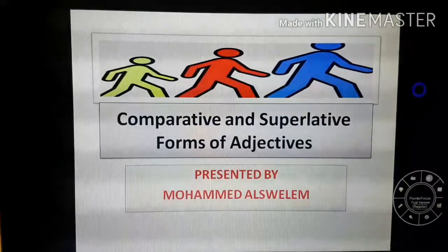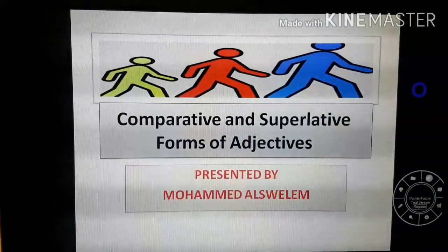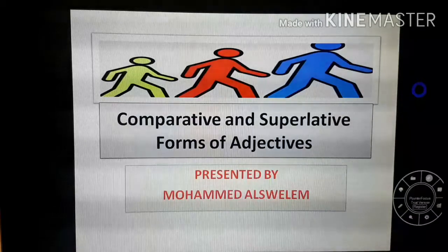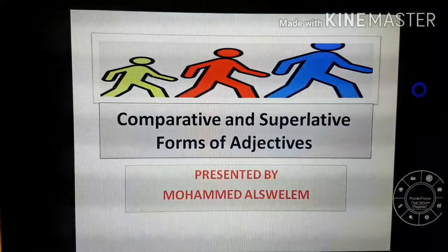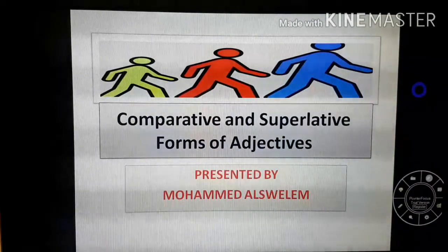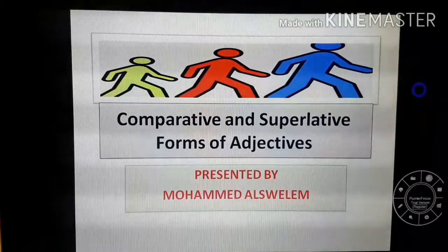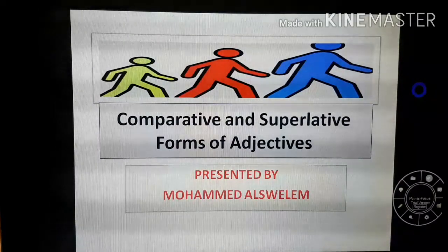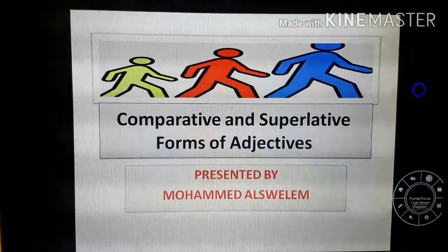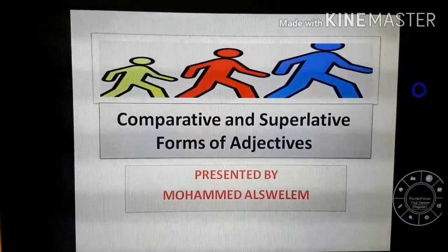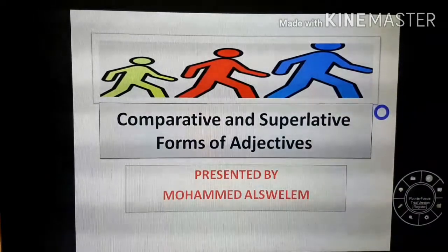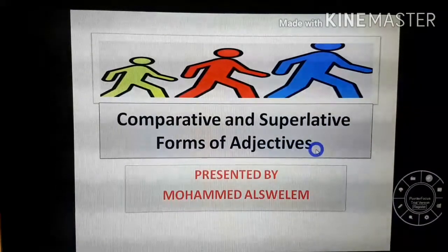Today, inshallah, I'm going to deal with the comparative and superlative forms of adjectives. Comparative is about comparing between two things or two persons. As for the superlative, I need three or more things or persons. Comparative means المقارنة, and superlative is التفضيل. Let's begin to discuss the comparative and superlative forms of adjectives.